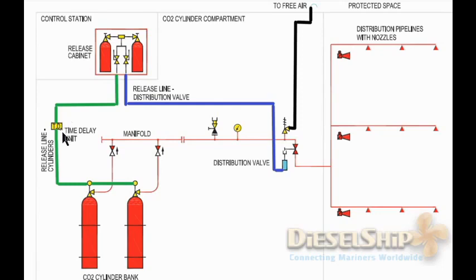The time delay unit can be either electrical or a simple empty bottle that creates a delay of 20 to 30 seconds — just the time needed to fill the bottle. The CO2 from the pilot bottle takes time to fill the empty bottle, and that is how the time delay is created. Electronically, there is a solenoid valve and a timer mechanism which, after the time delay of around 20 seconds, opens the solenoid so the CO2 goes and opens the main cylinder unit.